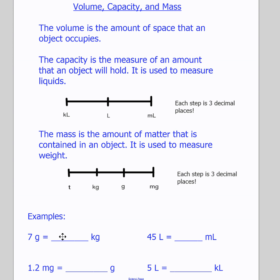Let's look at some examples. To go from grams to kilograms, we find grams on the chart, then move to kilograms. Each step is worth three decimal places, so we move three to the left. We find our decimal and move one, two, three to the left — giving us 0.007 kilograms. A gram is quite small, like the amount of sugar in one sugar cube, while a kilogram is like a bag of sugar, about two kilograms.